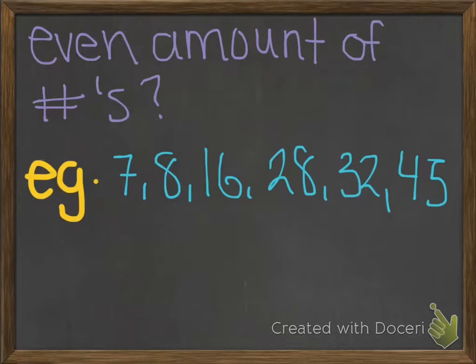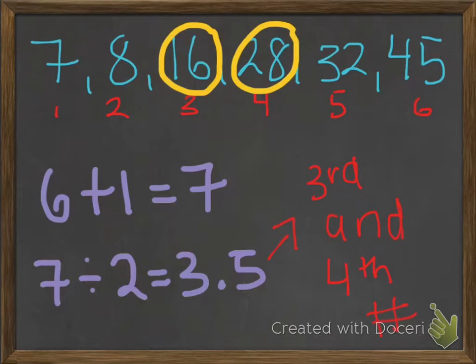What if there are an even amount of numbers in the data? If there are an even amount of numbers in the data, there will be two middle numbers. First, you add the amount of numbers in the data plus 1. We have 6 numbers in our data. 6 plus 1 equals 7.